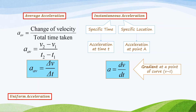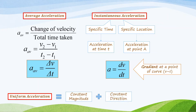The difference between average acceleration and instantaneous acceleration is that average acceleration has a certain time period from T1 to T2, but instantaneous acceleration is the acceleration at only a certain time. Uniform acceleration is acceleration with constant magnitude and constant direction, so dV/dt equals a constant.